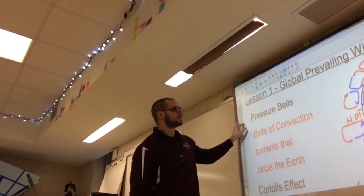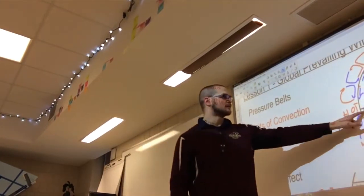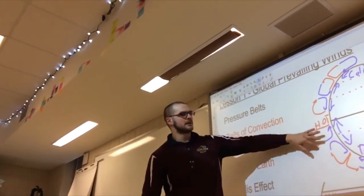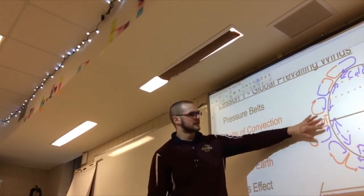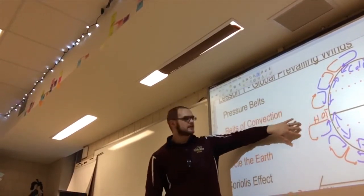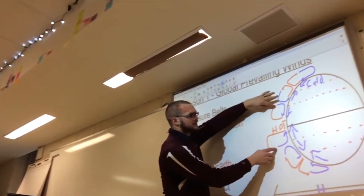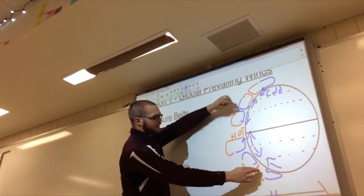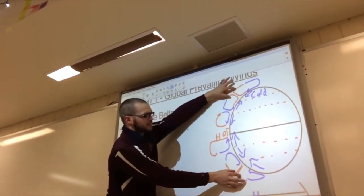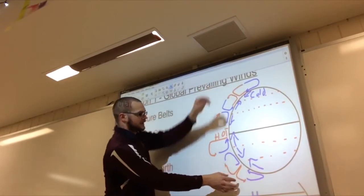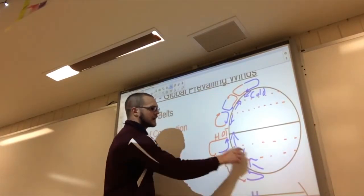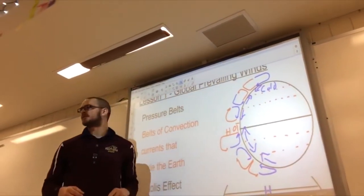Before we start though, just remember yesterday we talked about how we have these different wind belts. So here's a wind belt, hot air is rising by the equator, moving out, down and in, and then there's other air masses that typically rise up here, moving out, down, and that causes these different winds on the surface of the earth.